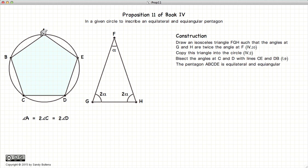Connect all our points A, B, C, D, E, and we have an equilateral, equal angular pentagon.